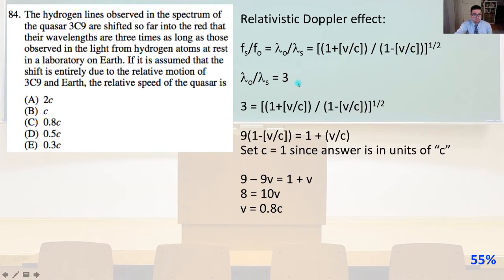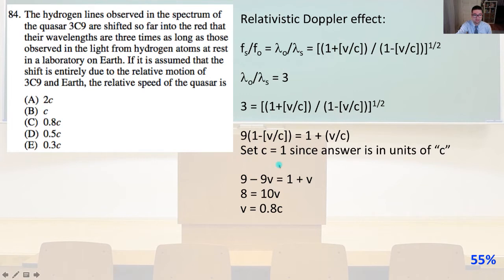Lambda observed over lambda sent equals 3. So 3 equals the square root of the quantity 1 plus V over C divided by 1 minus V over C. Squaring both sides, 9 times the quantity 1 minus V over C equals 1 plus V over C. Setting C equal to 1: 9 minus 9V equals 1 plus V, 8 equals 10V, and V equals 0.8C. That is answer C.